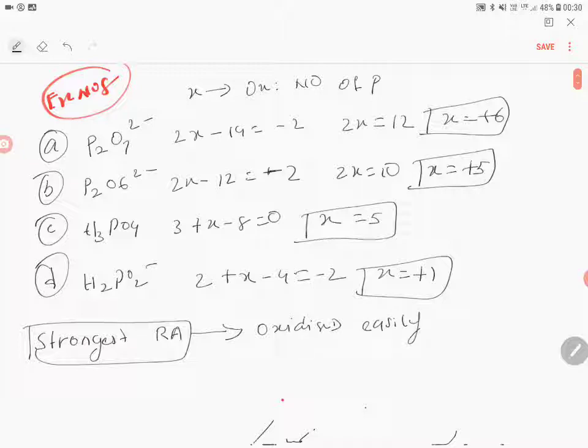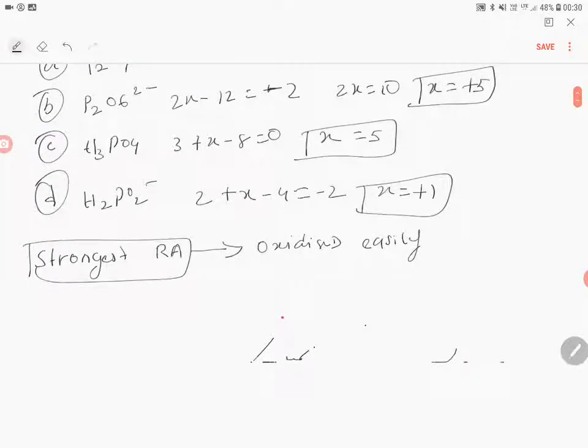For that, what you require is to identify the molecule amongst these choices which is going to be oxidized easily. That substance should have the lowest oxidation number.